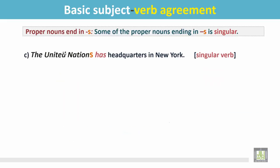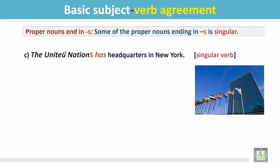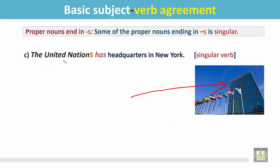Another example: 'The United Nations has headquarters in New York.' This is the headquarters of the United Nations. It is a proper noun that ends in S. It's not plural — it is a singular noun, so the verb is singular: 'has.'